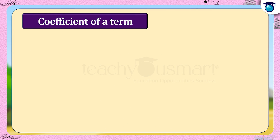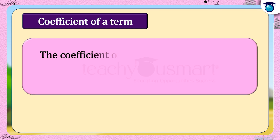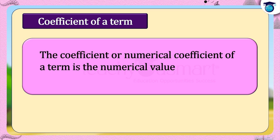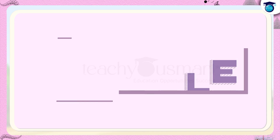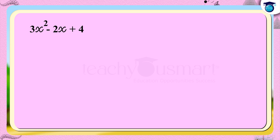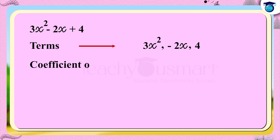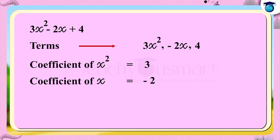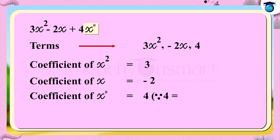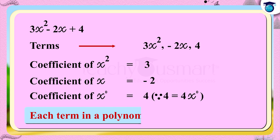Now, what is the coefficient of a term in a polynomial? The coefficient, or numerical coefficient, of a term is the numerical value associated with that term. For example, in the polynomial 3x squared minus 2x plus 4, the terms are 3x squared, minus 2x, and 4. The coefficient of x squared is 3, the coefficient of x is minus 2, and 4 is the coefficient of x raised to 0, since 4 can be written as 4x raised to 0. Each term in a polynomial has a coefficient.